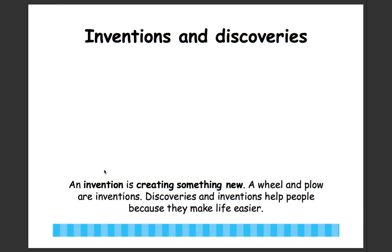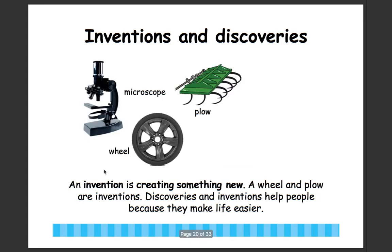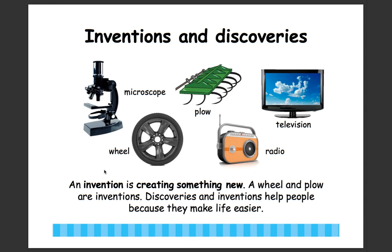An invention, however, is creating something new. A wheel and plow are inventions. Discoveries and inventions help people because they make life easier. These inventions put simple and complex machines together to create something that didn't exist before. The microscope helps people see things close up. A wheel helps vehicles move more smoothly and faster. A plow prepares the field for plants and seeds. A radio transmits sound, and a television transmits sound and images. These are inventions — creations of something new.